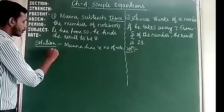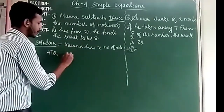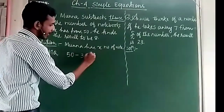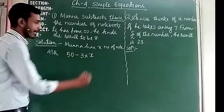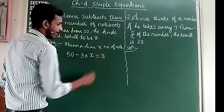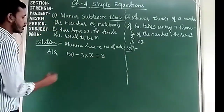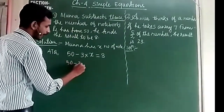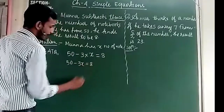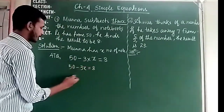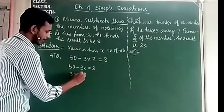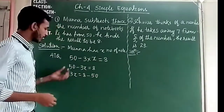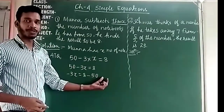According to the question, subtracting 3 times x from 50 gives the result 8. So we write: 50 minus 3x is equal to 8. Now we transfer 50 to the right-hand side. Because it is positive on the left, it becomes negative on the right.